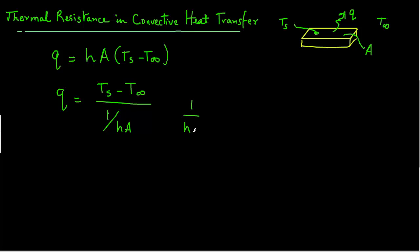So this term, 1 over H A, is the thermal resistance due to convection.